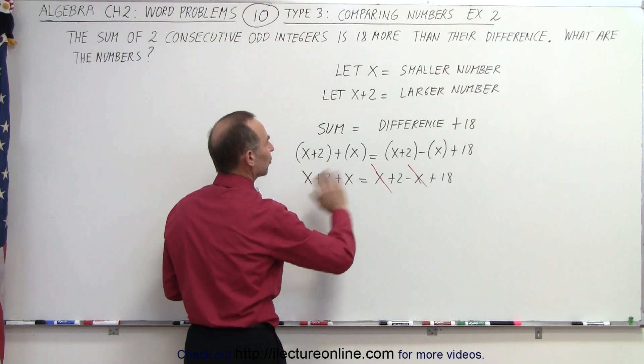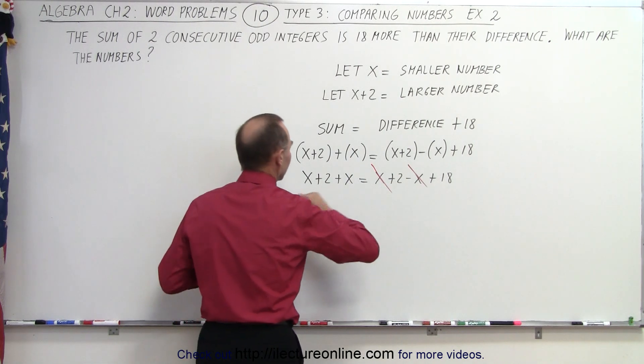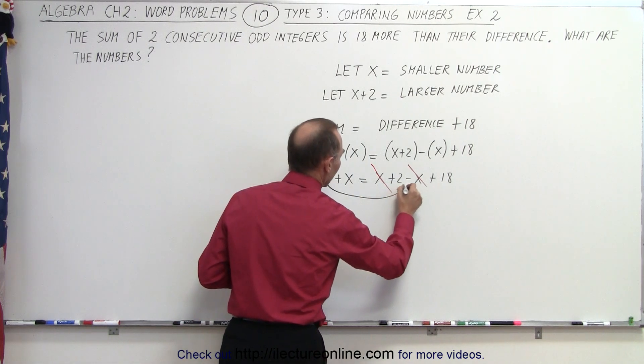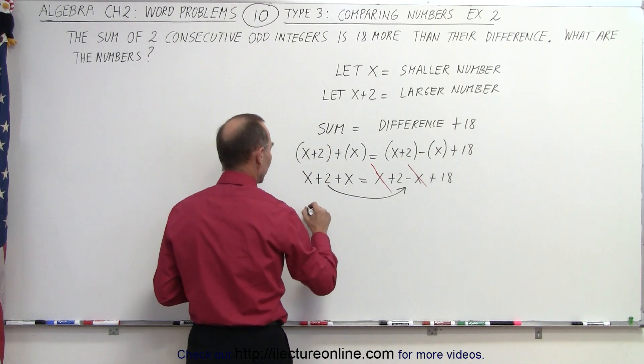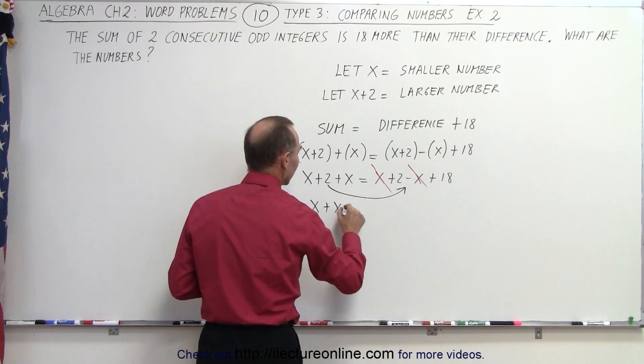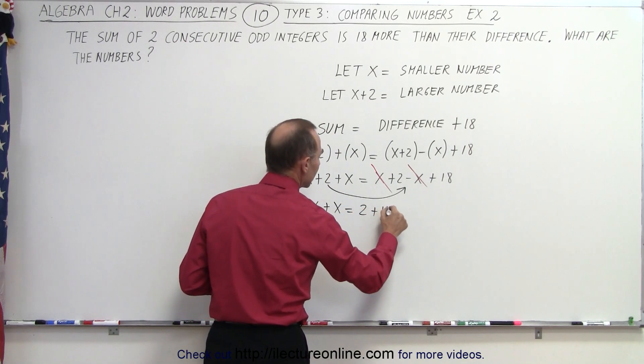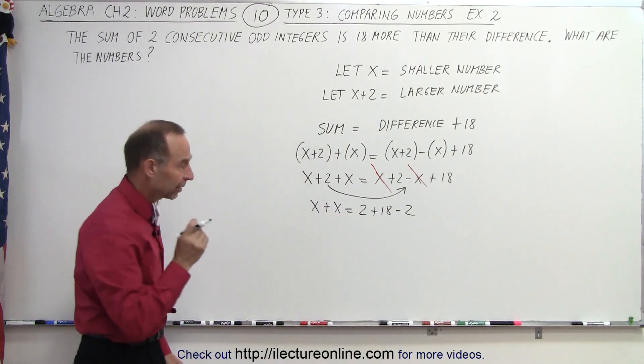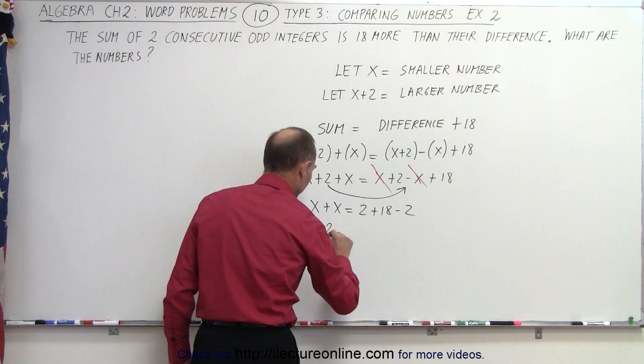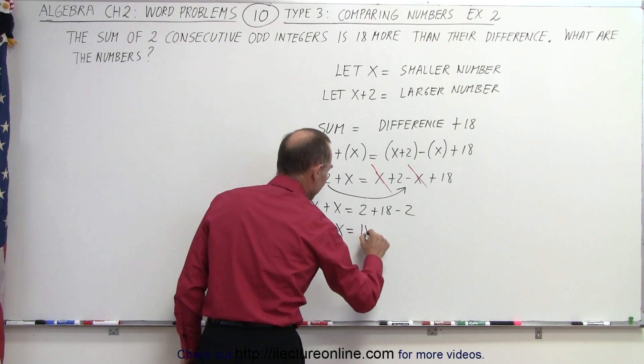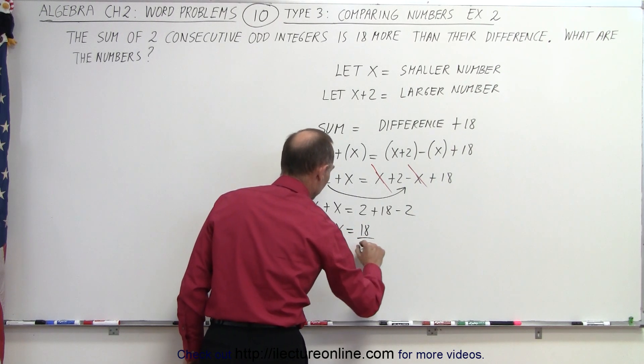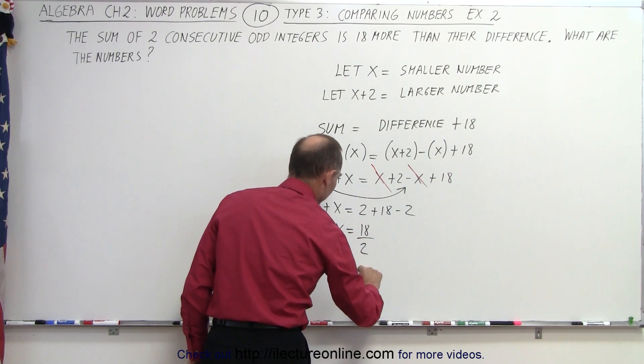Now we want all the numbers on one side, all the x on the other side. So this number goes the other side. A plus 2 becomes a minus 2. So we end up with x plus x is equal to 2 plus 18 minus 2. Now we collect common terms. 2x is equal to 18, divide both sides by 2, and x is equal to 9.